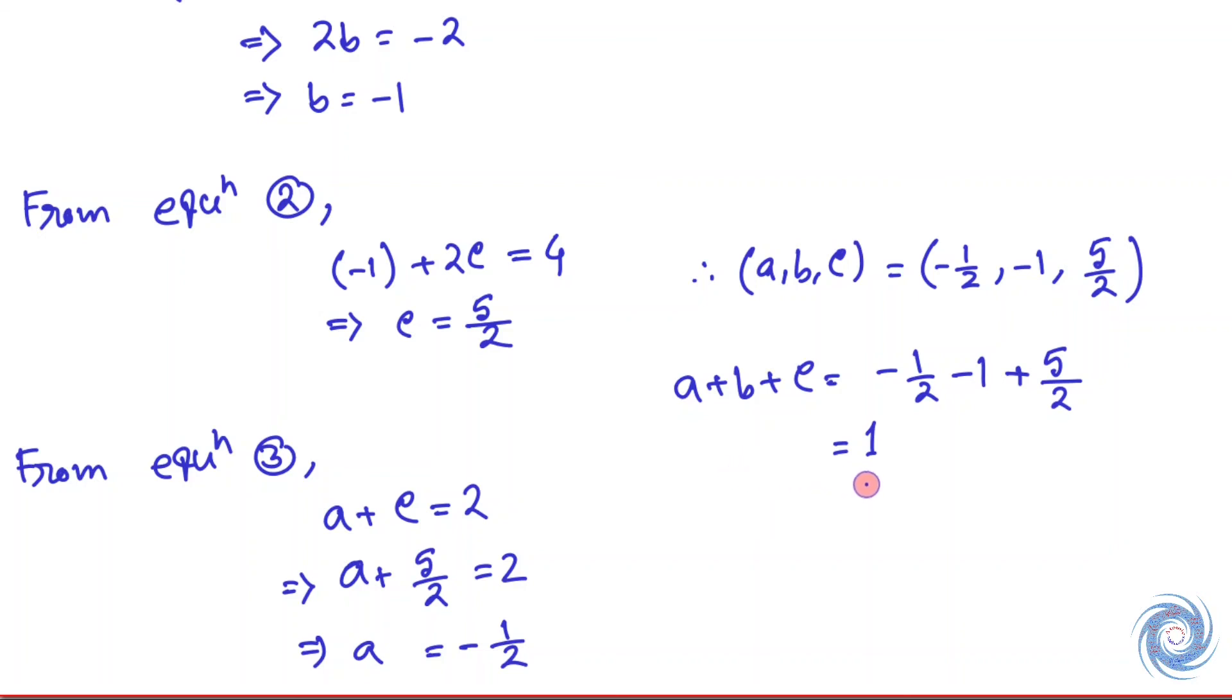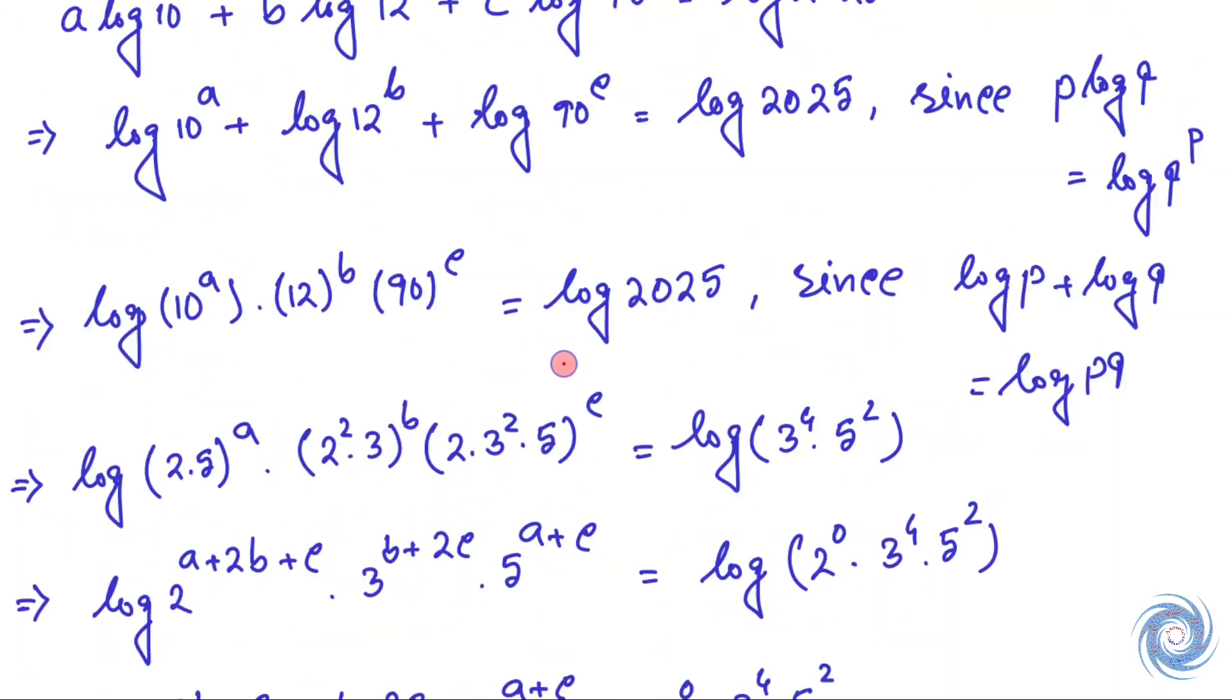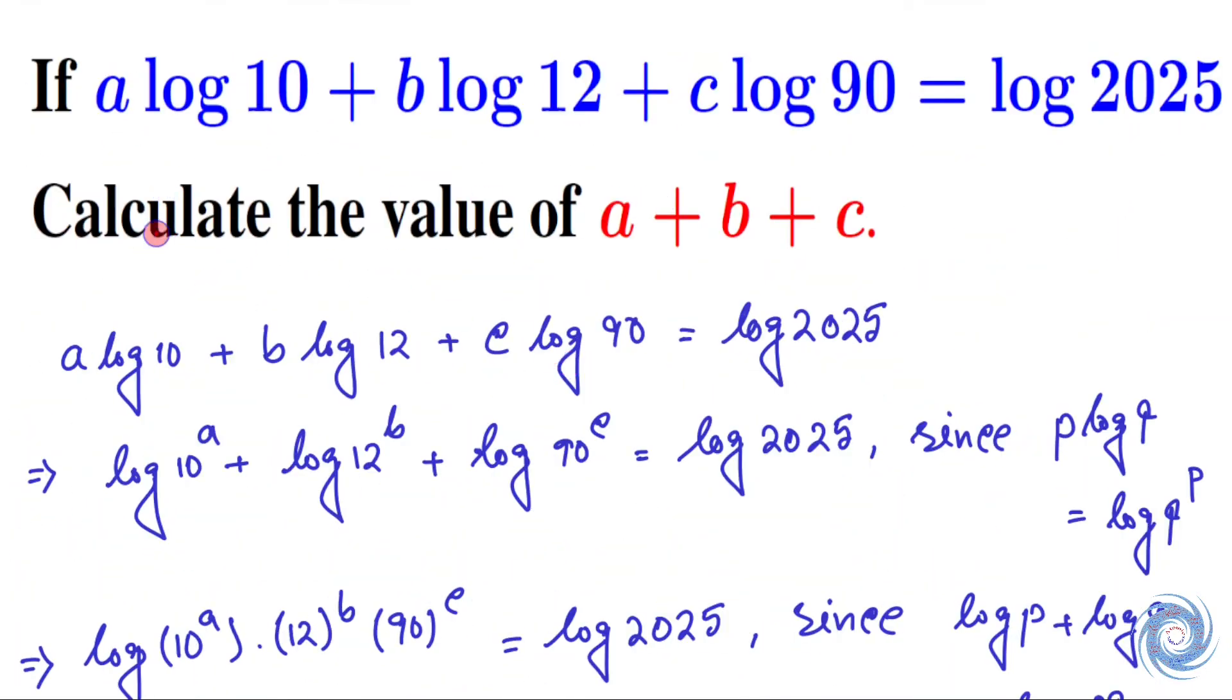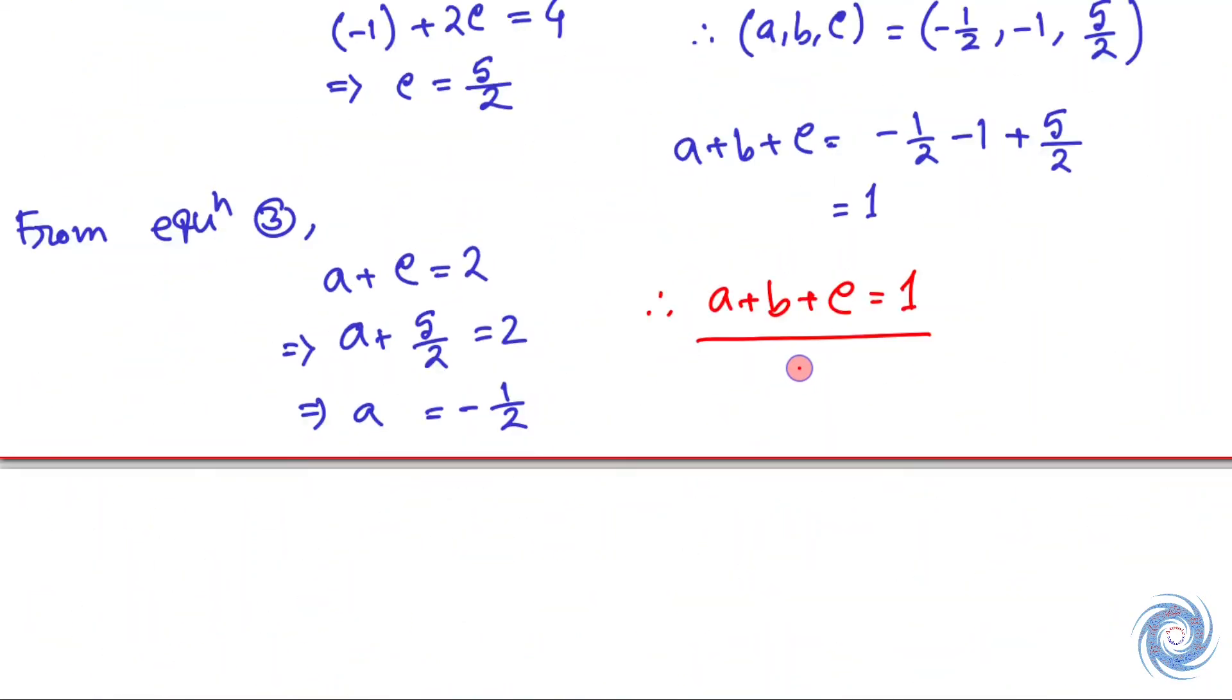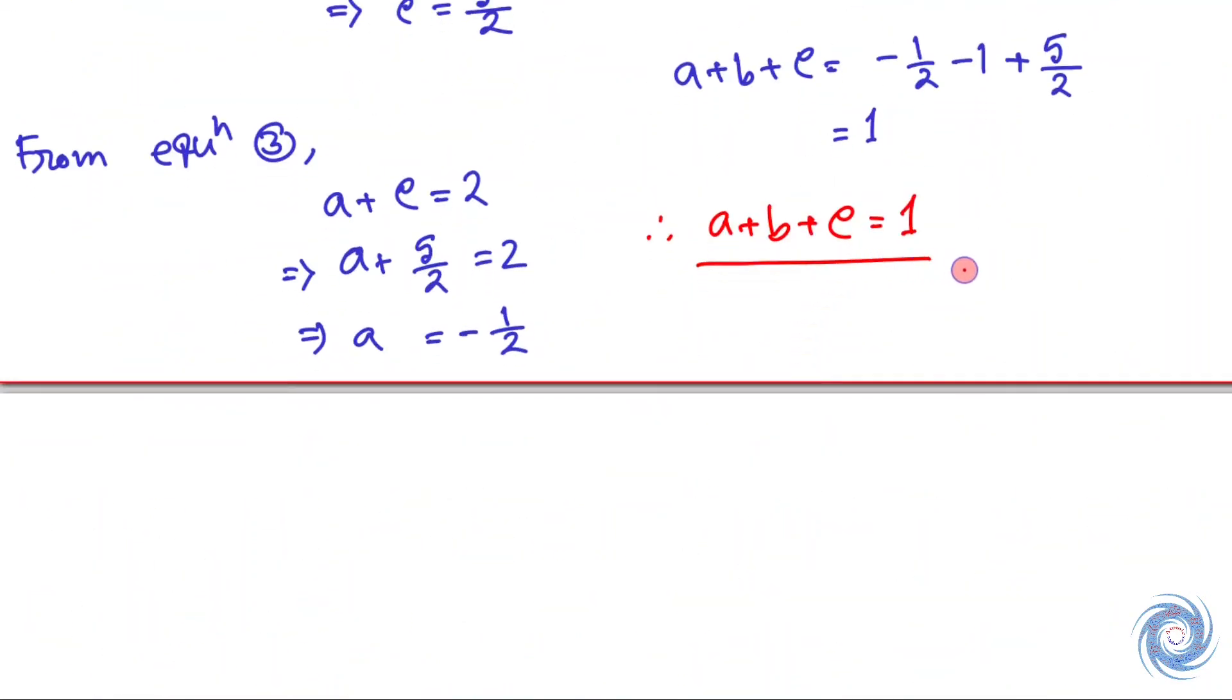We have a plus b plus c equals 1. We are supposed to find the value of a plus b plus c, and here we have a plus b plus c equals 1, so we are done. Thank you.